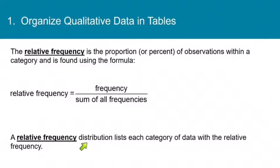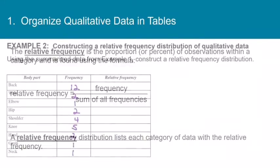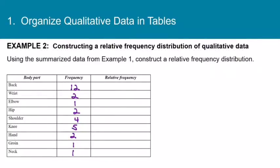Now a relative frequency distribution lists each category of data with the relative frequency. So a frequency distribution lists the frequencies, and a relative frequency distribution lists the relative frequencies. But it's the same type of distribution as you're about to see in our next example, where we're going to take our frequency table that we just found and turn it into a relative frequency table. And here is that frequency table, and so now we're going to calculate the relative frequency.